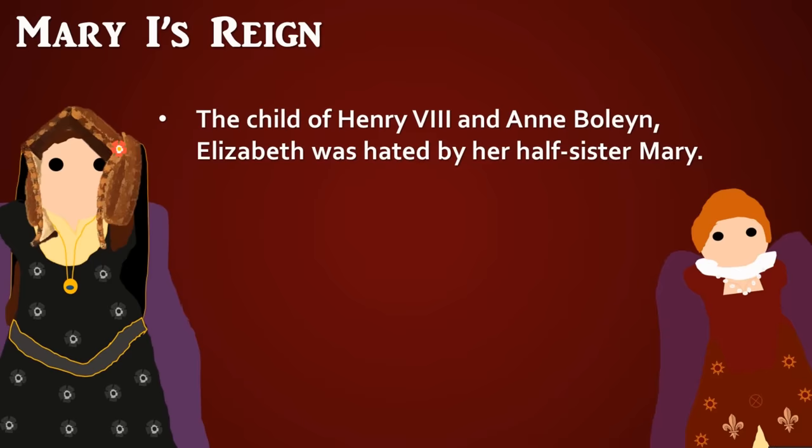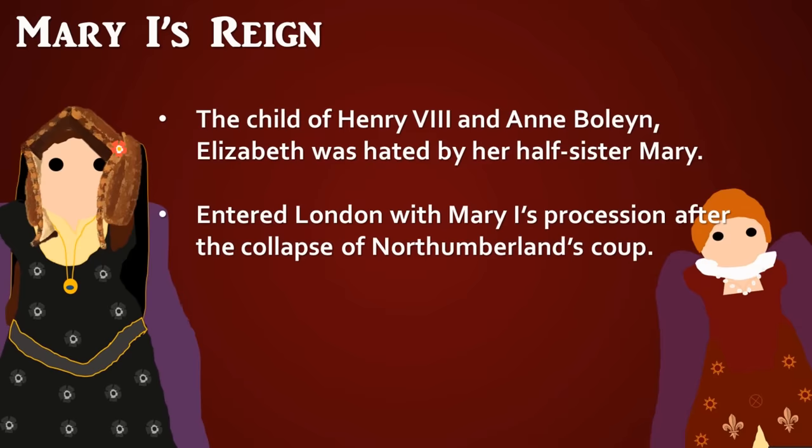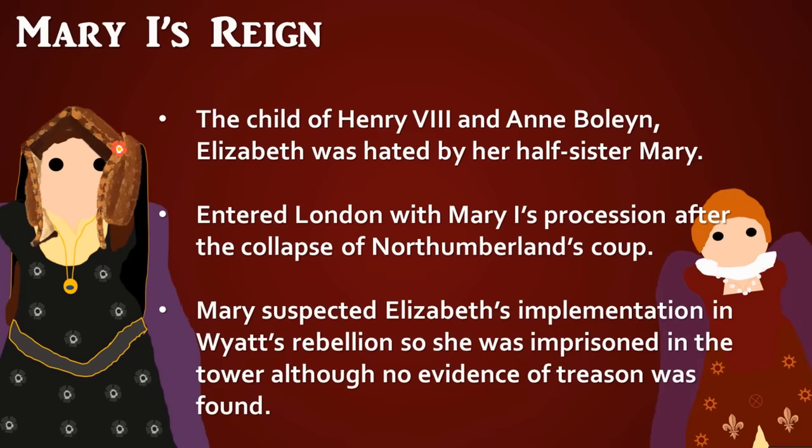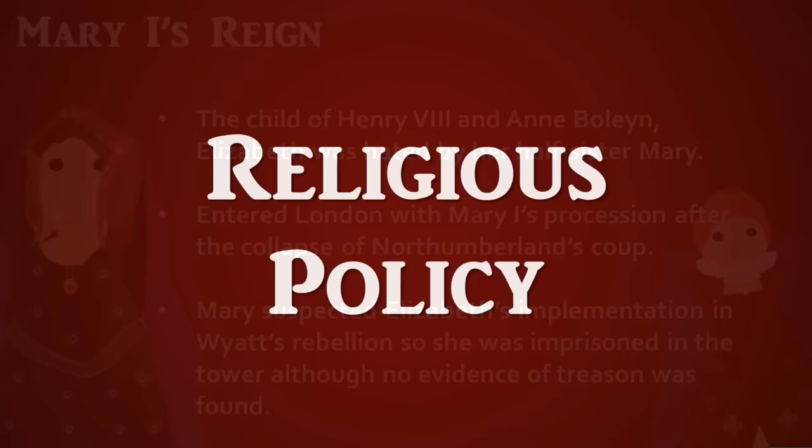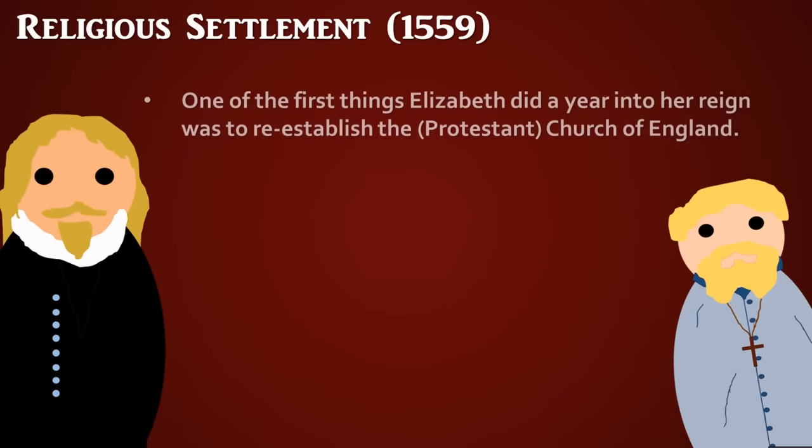She was the child of Henry VIII and Anne Boleyn, making her the half-sister to Mary, who hated her because Elizabeth was essentially the reason Mary had been barred from the succession and her mother had fallen from grace. Elizabeth entered London with Mary's procession after the collapse of Northumberland's coup with the devise of the succession in 1553. She was suspected of involvement in the 1554 Wyatt's Rebellion and was imprisoned in the Tower, although no evidence was found so she kept her life.